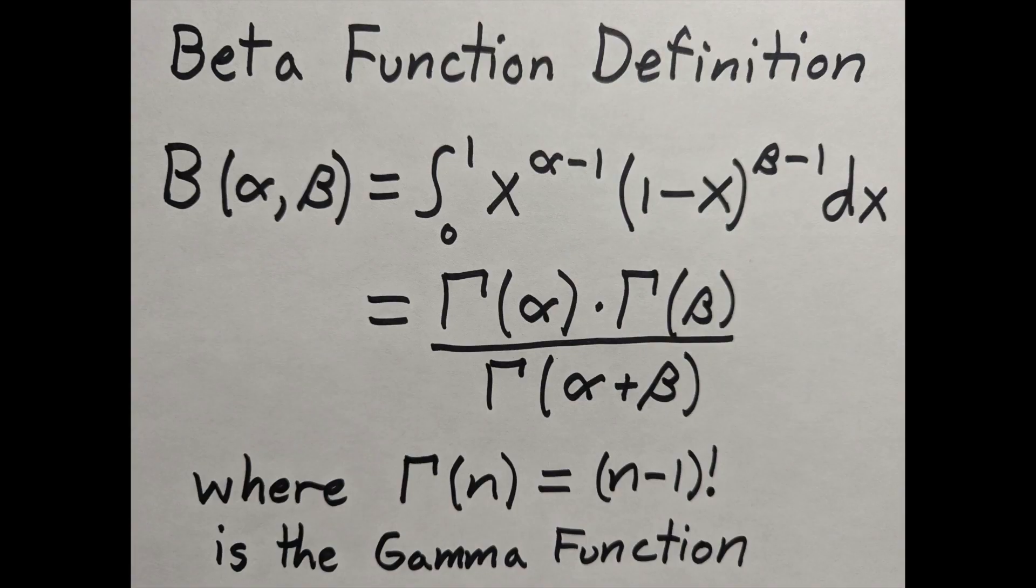The beta function is used in probability and statistics. It has a definition in the form of an integral. It's a function of two parameters, alpha and beta.